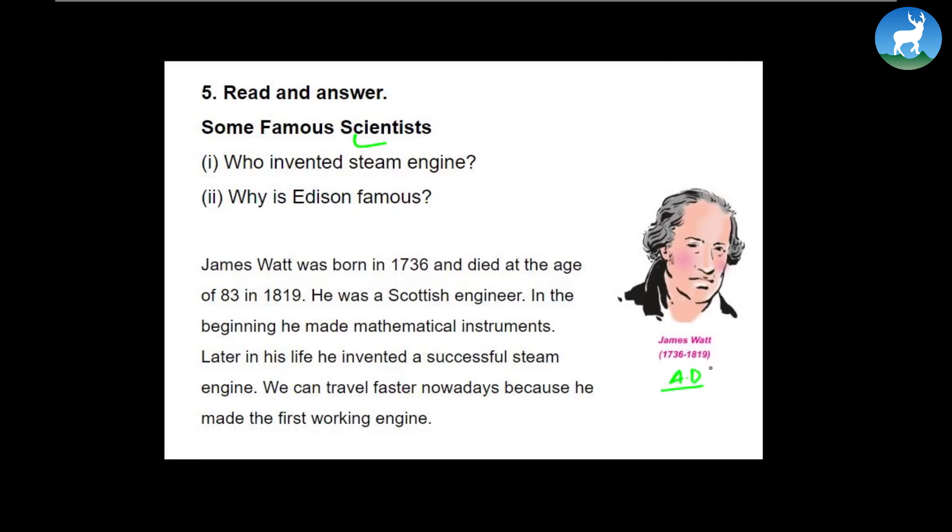James Watt was born in 1736 and died at the age of 83 in 1819. He was a Scottish engineer. In the beginning he made mathematical instruments. Later in his life he invented a successful steam engine. We can travel faster nowadays because he made the first working engine. So before James Watt people relied heavily on muscle. Because of his inventions our civilization slowly moved from muscles to engine. We started relying more on engine. So we find the first answer right here - who invented steam engine? Remember it's asked in simple past, so answer in simple past. The answer could be: James Watt invented steam engine.